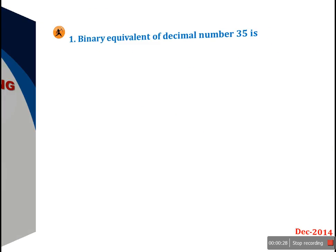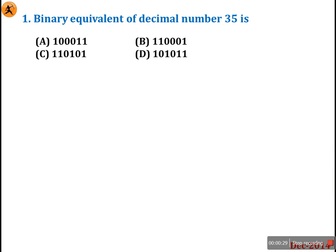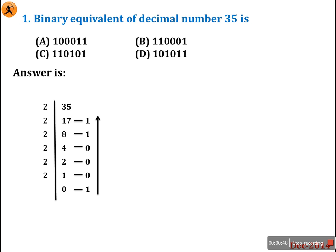We will look at the first question. It was asked in UGCnet December 2014: 'Binary equivalent of decimal number 35 is?' That means, what is the binary equivalent of 35? 35 is the decimal number — just find the equivalent binary number. For this, we will first go through the traditional method.